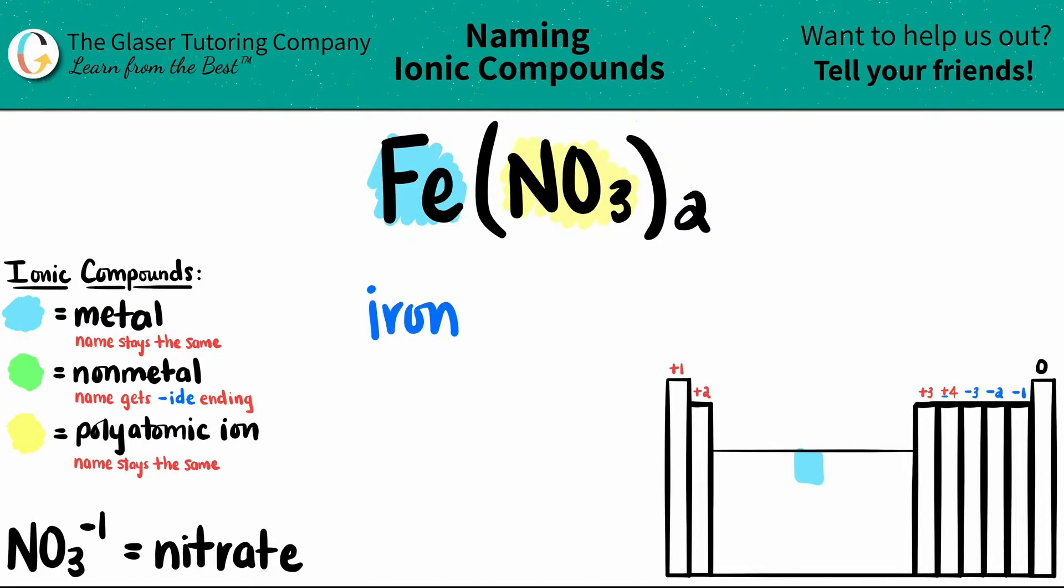Since this is a polyatomic, the polyatomic name always stays the same. So since NO3 was nitrate, I'm going to leave it as nitrate.